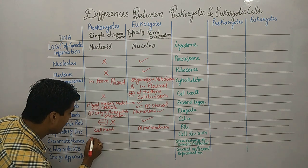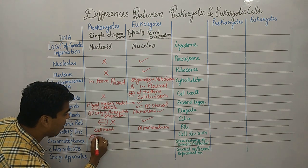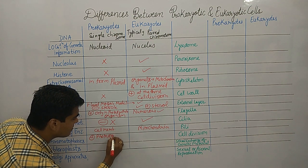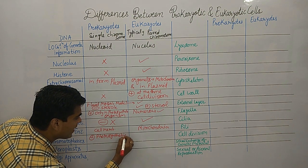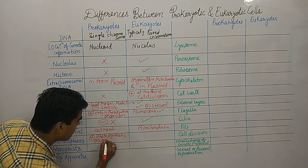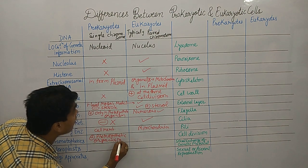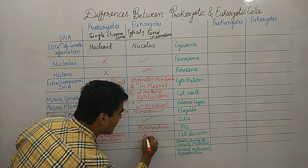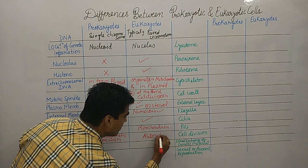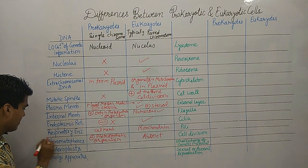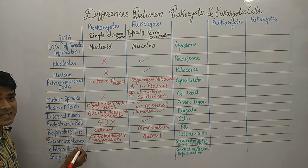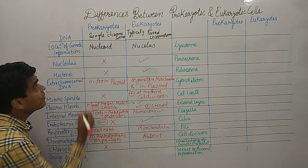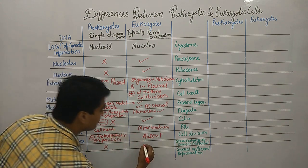Chromatophores are generally present in prokaryotic photosynthetic organisms, but in eukaryotes chromatophores are absent — that is an important point. Chloroplast is generally absent in prokaryotes and present in eukaryotes.